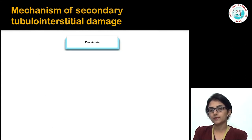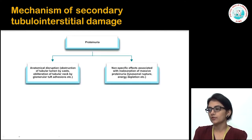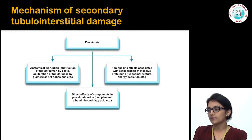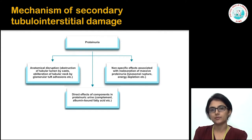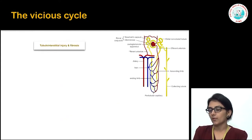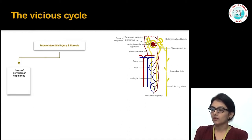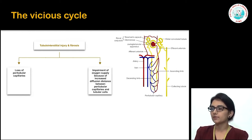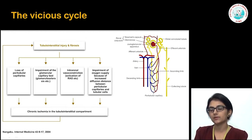If a patient has primary glomerular disease with significant proteinuria, how does that cause tubular interstitial damage? The mechanisms include anatomical obstruction of tubular lumina by casts causing back pressure, direct tubulotoxic effects of proteins, and nonspecific effects of massive protein resorption such as lysosomal rupture and mitochondrial damage causing energy depletion. Once tubular interstitial damage starts it becomes a vicious cycle — loss of peritubular capillaries, impaired oxygen supply due to increased diffusion distance — leading to ischemia, propagating further injury and fibrosis.